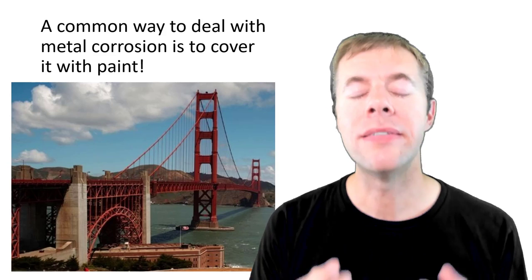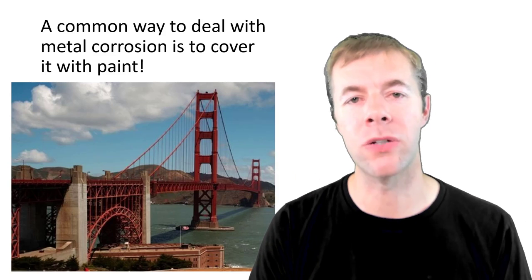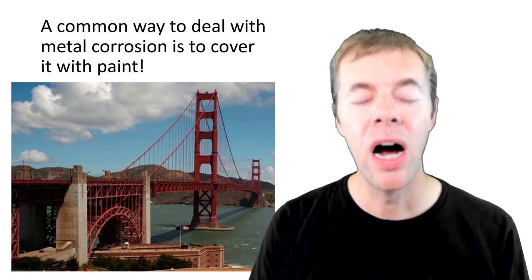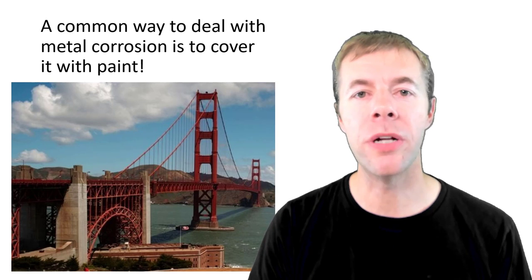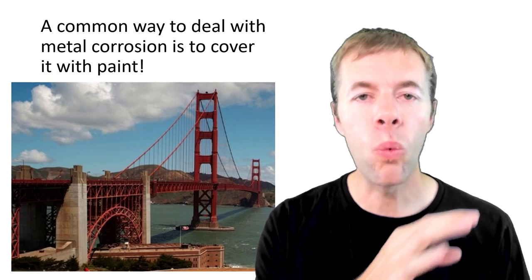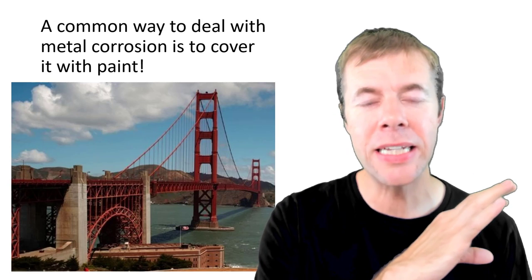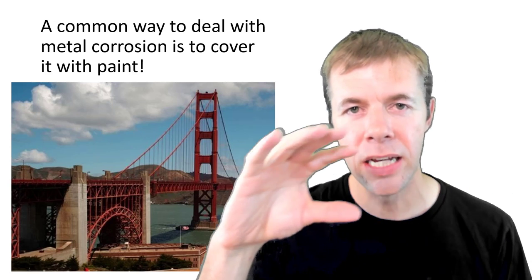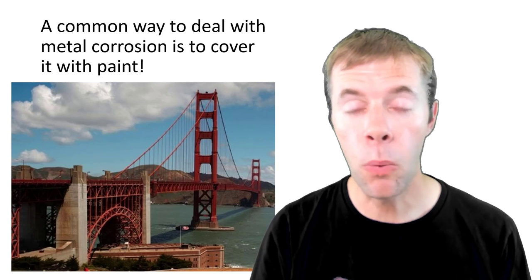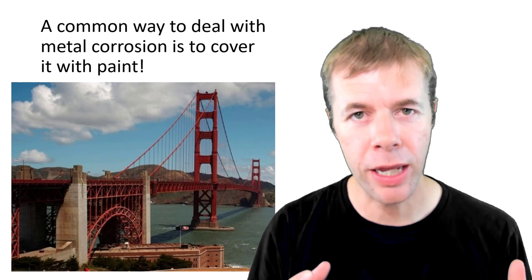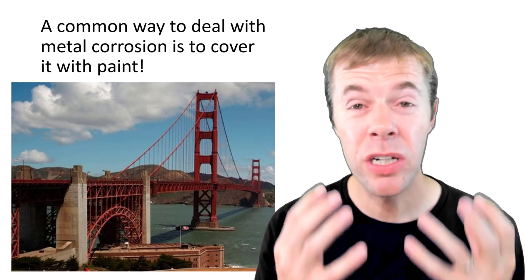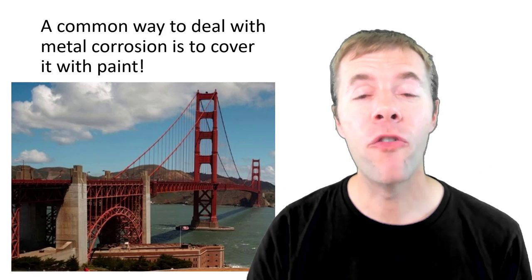A common way to deal with corrosion of metals is to paint them. I've shown a picture of the Golden Gate Bridge here. Did you know that they start on one side of the Golden Gate Bridge and continuously paint it from one side to the other, and once they finish they start over again and paint it again because they're so scared of corrosion.